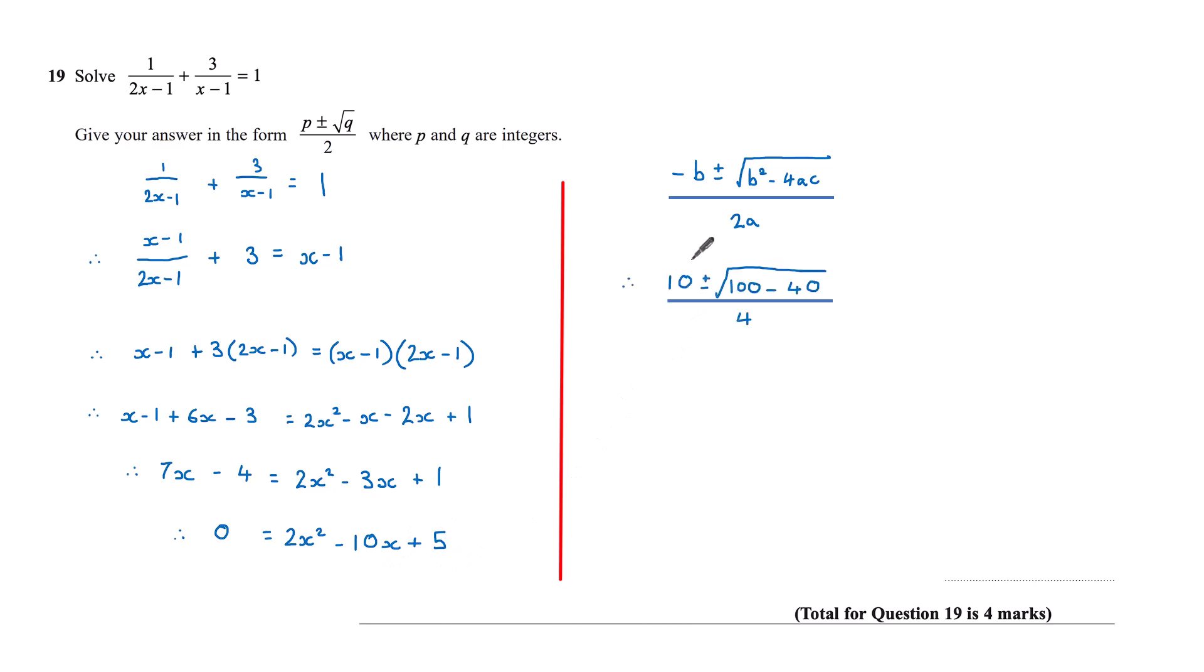So that means I've got minus b, that's 10, plus or minus the square root of minus 10 all squared is 100, minus 4 times 2 times 5, that's 8 times 5 is 40, all over 2a, 2 times 2 is 4.